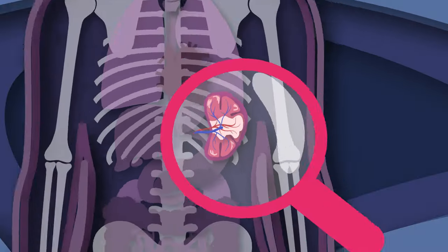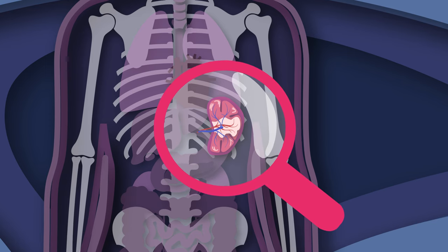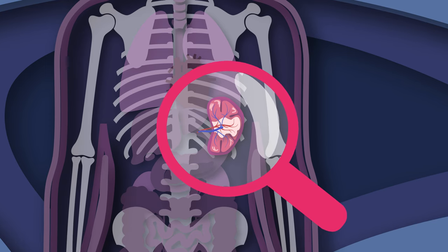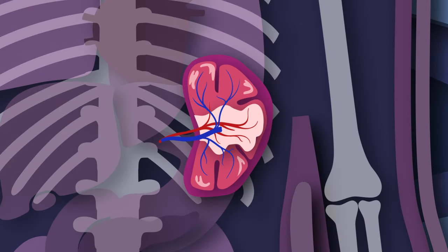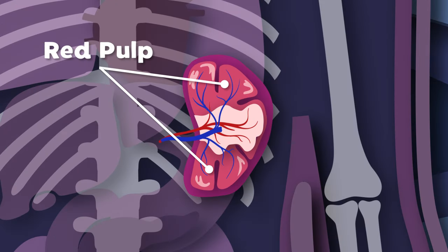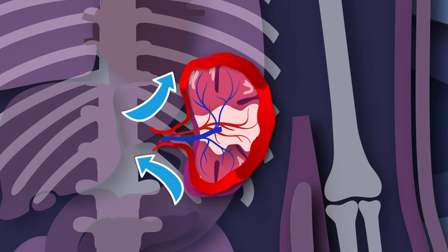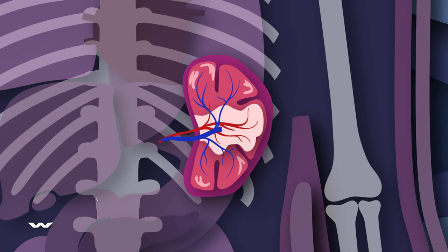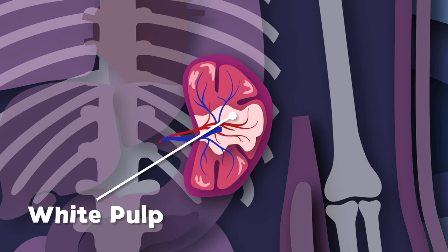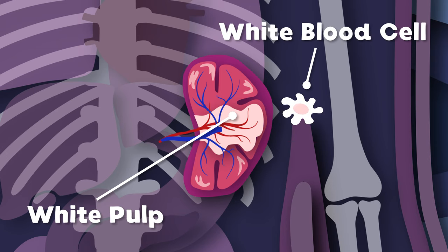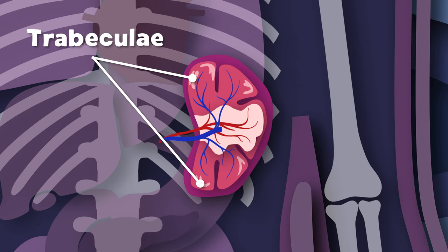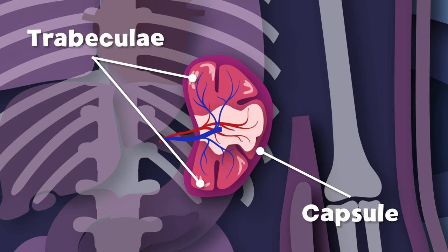Let's take a look inside the spleen to learn more of its parts. There are two main types of tissue in me, and that's where we'll start. The first main tissue is called the red pulp — it filters blood of antigens, microorganisms, and defective red blood cells. The second main tissue is called white pulp — it's part of the immune system, mainly made up of white blood cells. The trabeculae of the spleen is the framework within, which is attached to the capsule that surrounds the spleen, and it's thin.